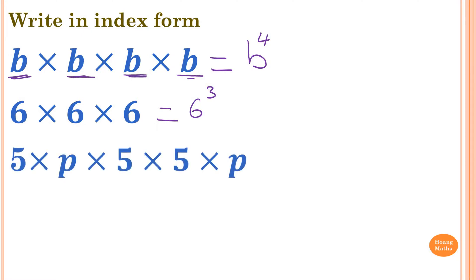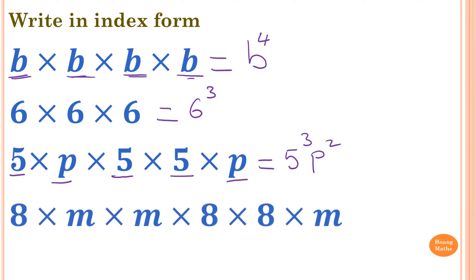5 times P times 5 times 5 times P — we group the numbers first. So 5 times 5 times 5, which is 5 to the power of 3. And P times P is P to the power of 2, or P squared. Last one: 8 times 8 times 8, which is 8 to the power of 3. And M times M times M, so M to the power of 3 as well.